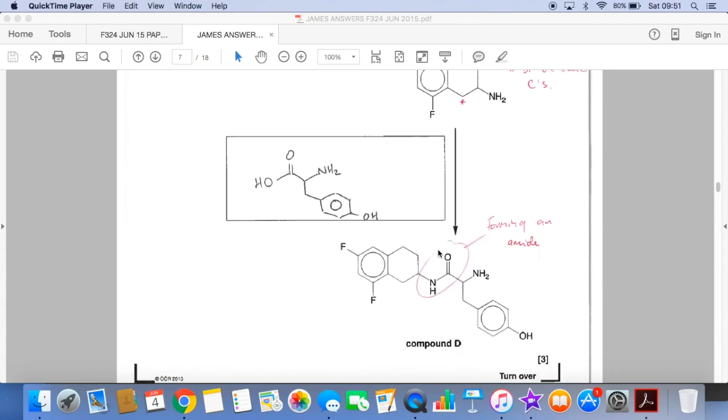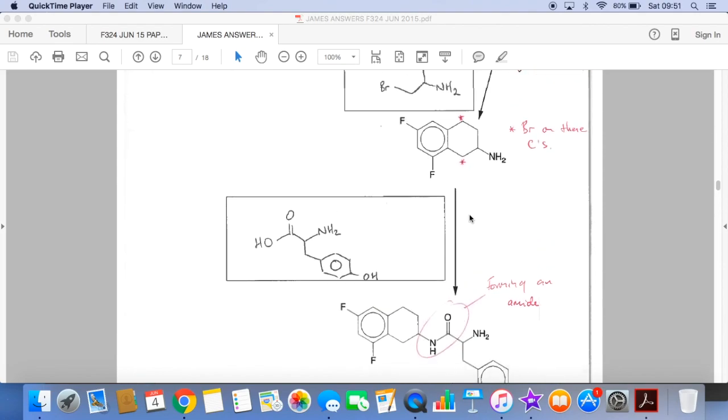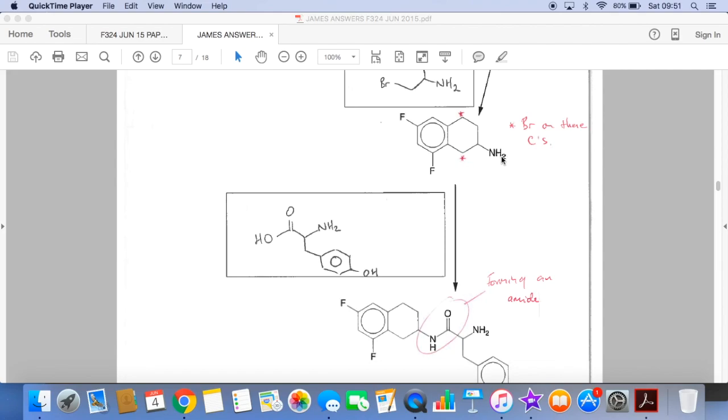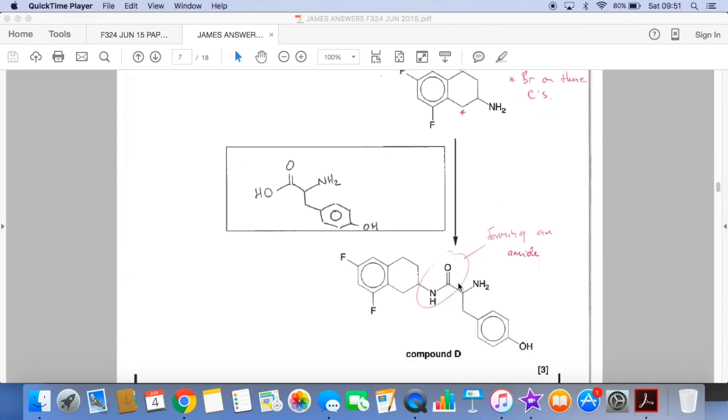And then to make D, we essentially need to form an amide. So we're going to join, we're going to form an amide bond here with something that's going to give us this structure here. Well, that's obviously going to be a carboxylic acid. And so the unknown structure would be that.